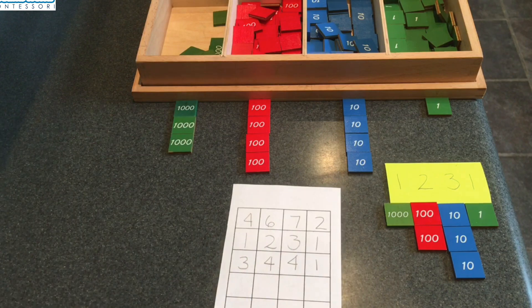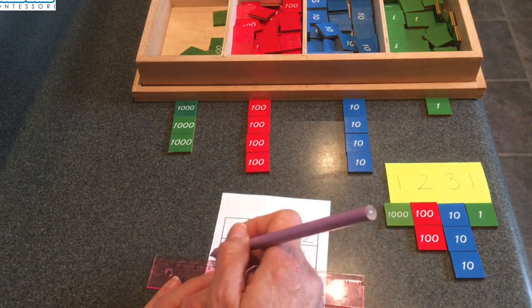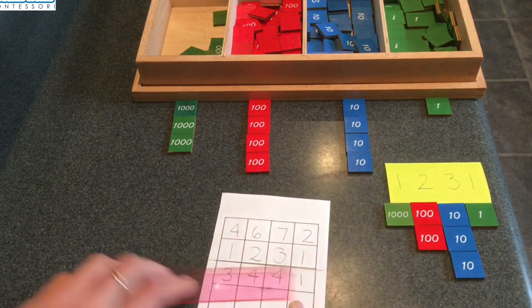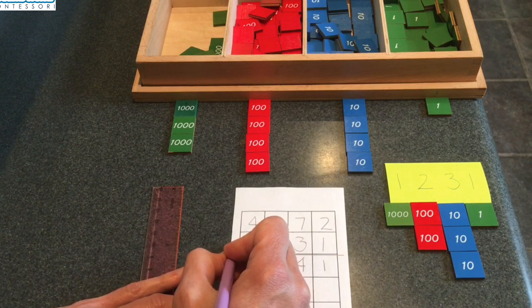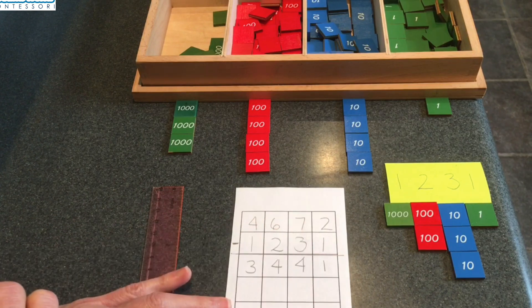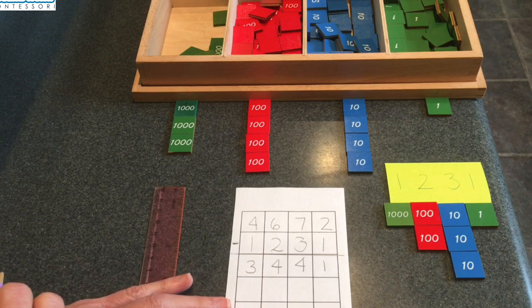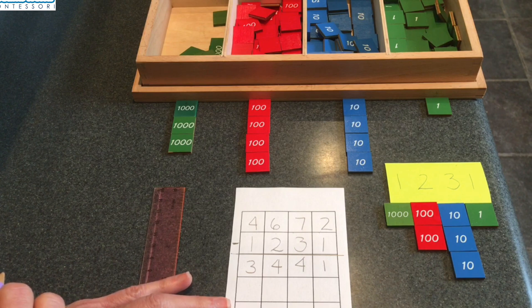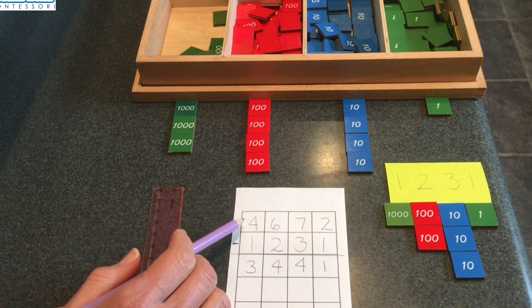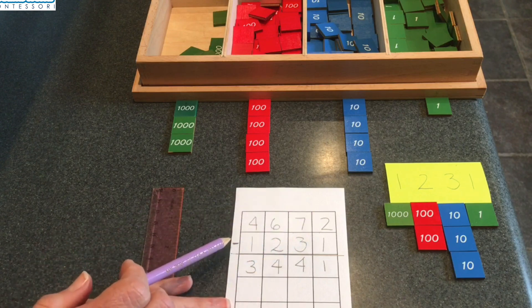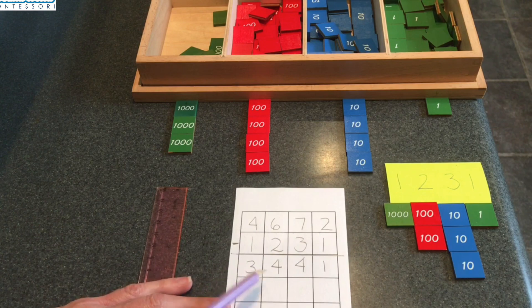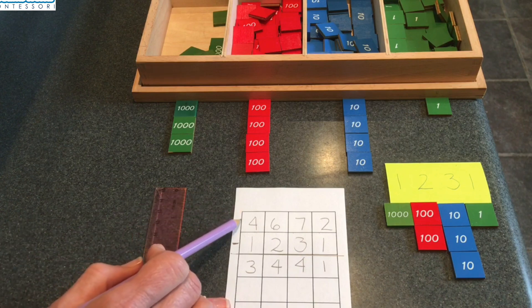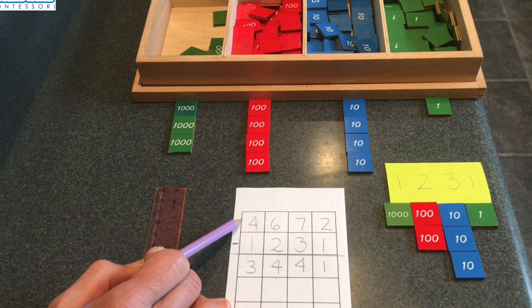Just like with addition, we can draw an equals bar above our answer. You've done that before. And this is not addition, so we don't want to make a plus sign. Instead, we'll make a minus sign or a subtraction sign. It's just a line like that. Do you see it? Can you read the whole problem? That's right. 4,672 minus 1,231 equals 3,441. This first number is called the minuend.